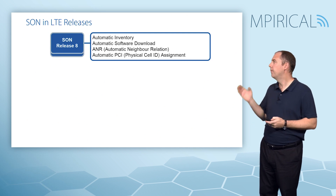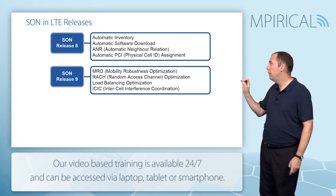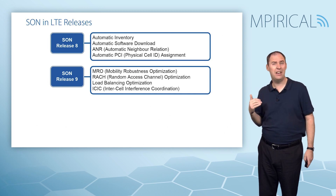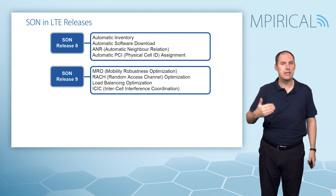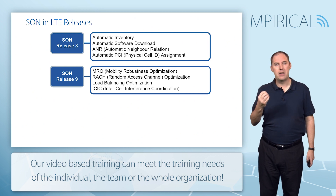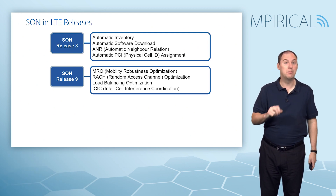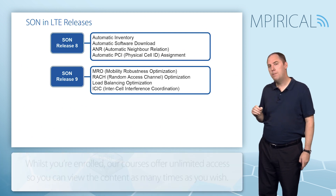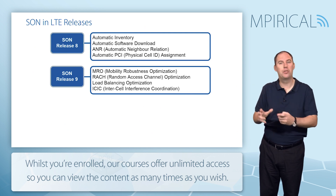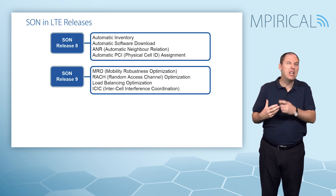Moving to Release 9, more features are added. MRO (Mobility Robustness Optimization) improves KPIs associated with handover failures, addressing whether handovers happened too early, too late, or caused ping-pong between cells, ultimately improving system capacity. RACH optimization addresses the probability and time taken to access the system, minimizing access failures. Load balancing optimization handles highly loaded cells by handing off users to reduce load and optimize resource allocation.